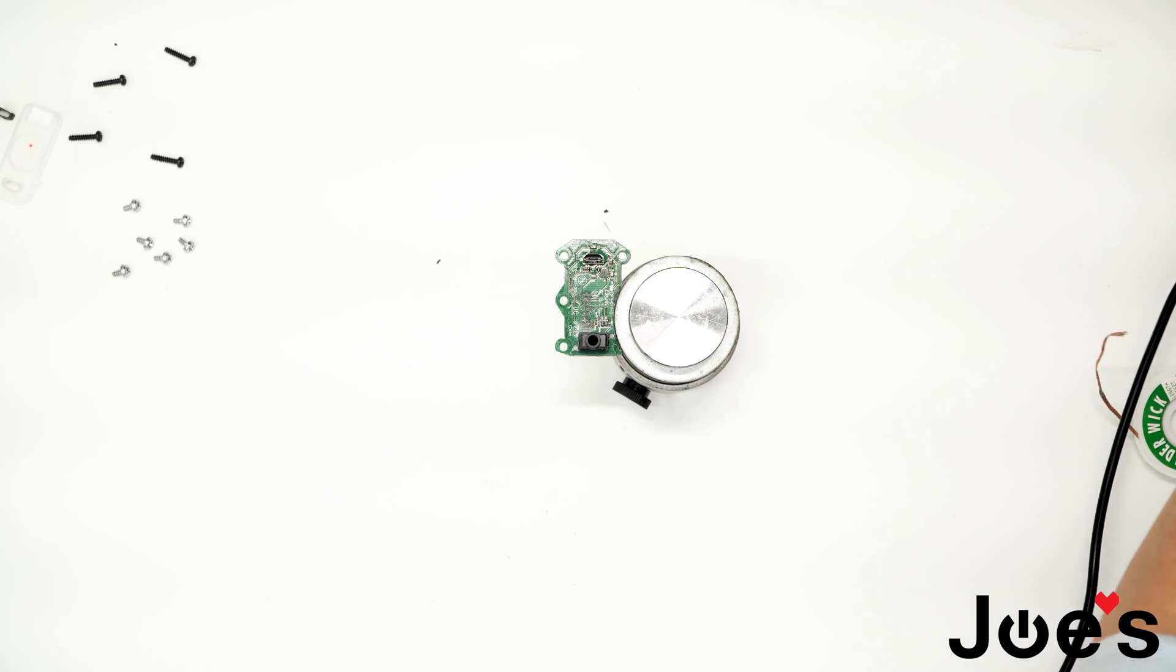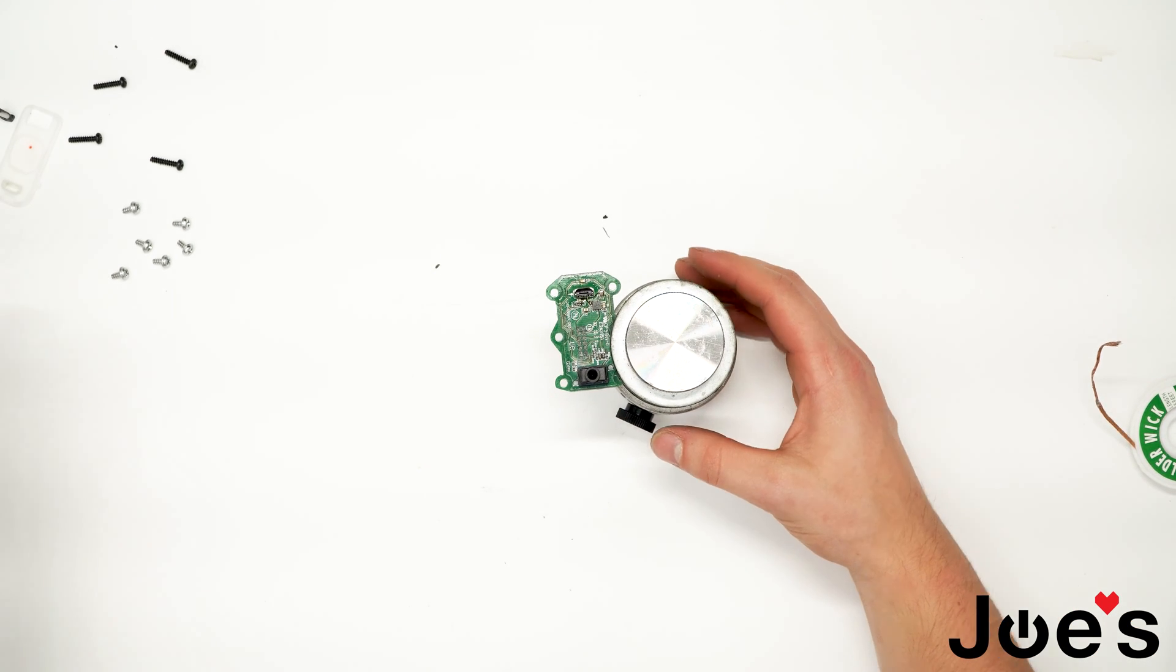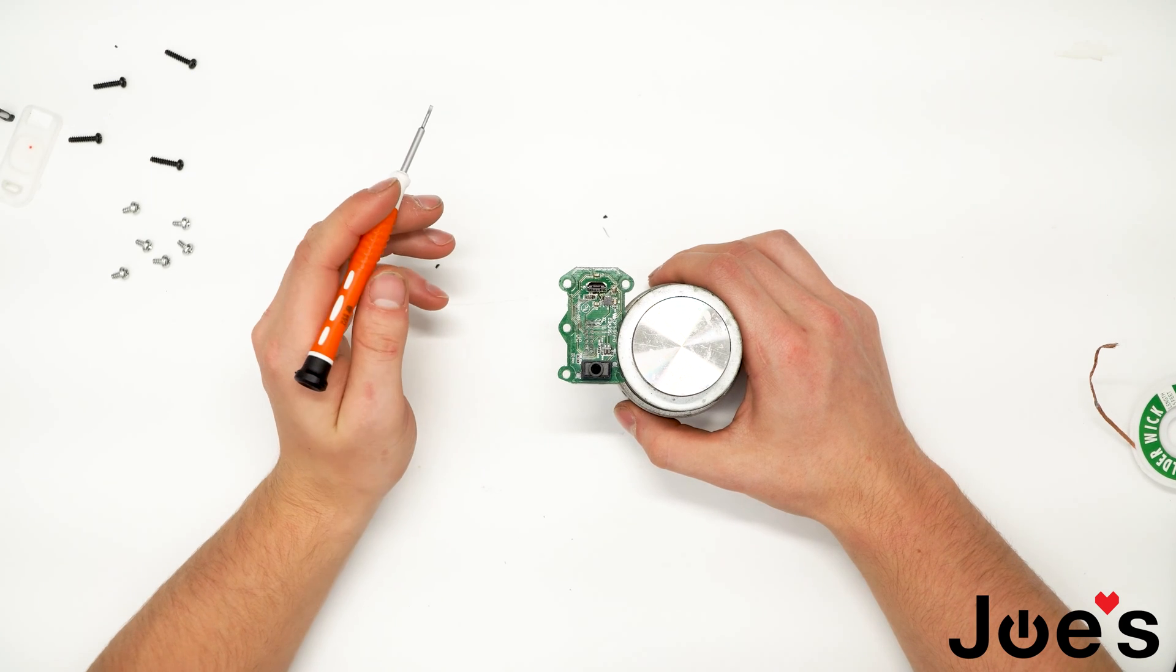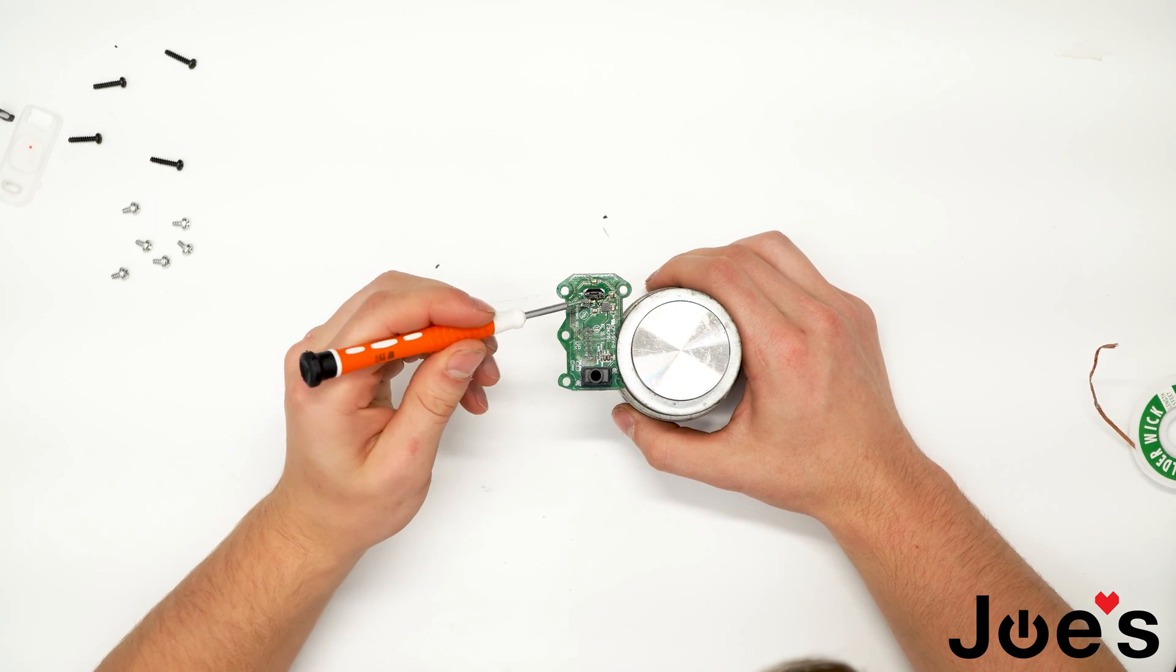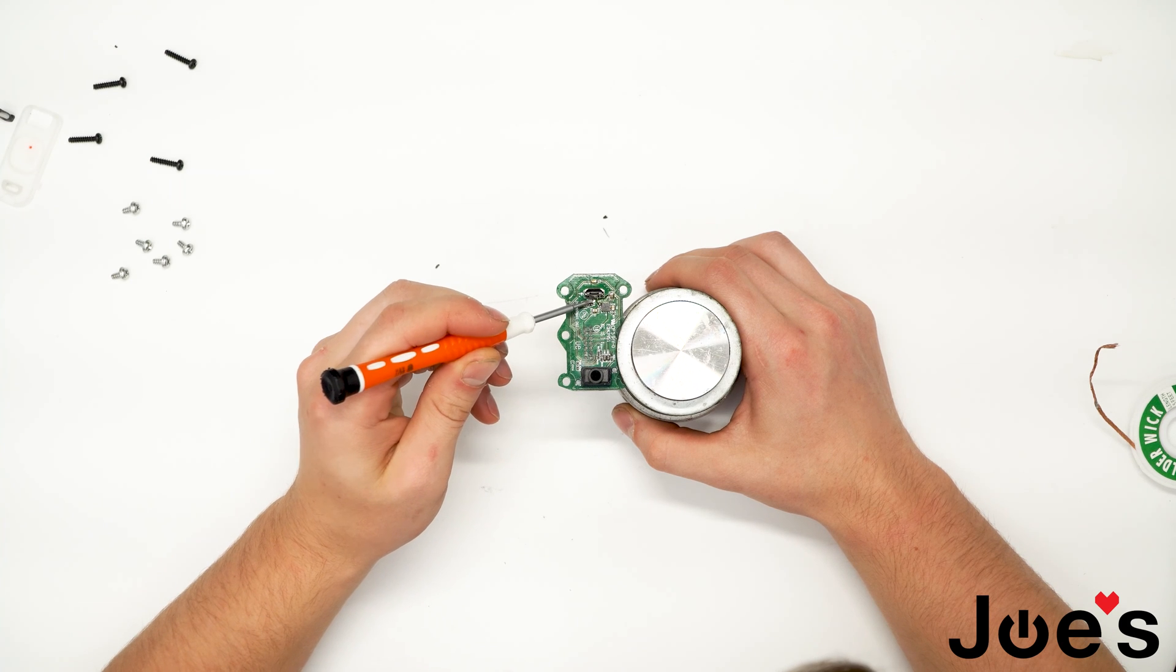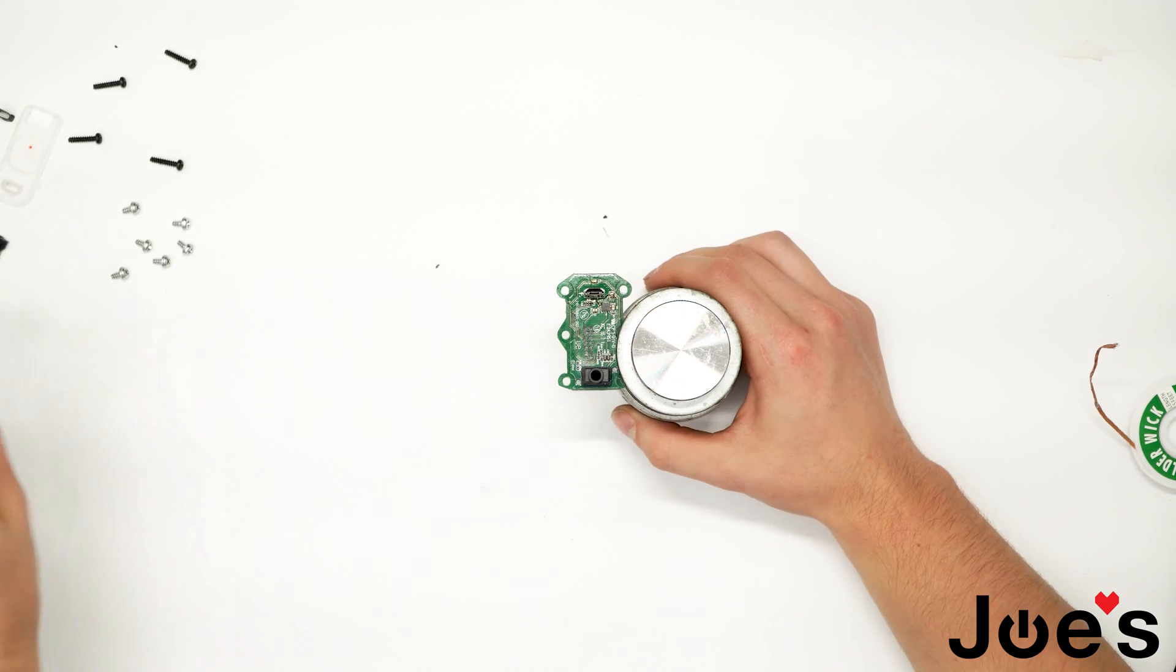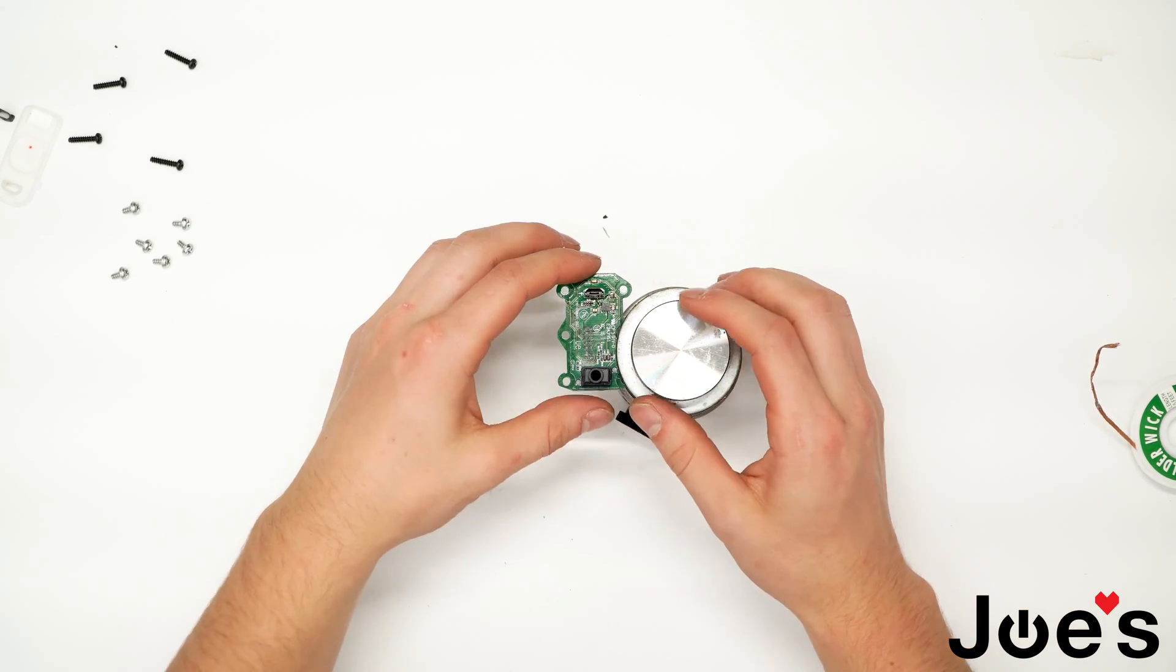And if you're ever unsure whether or not they're connected or if it's a good solder joint, just grab like a flathead and nudge each and every one of them. And if they move, then you got to resolder it. But these look fine.